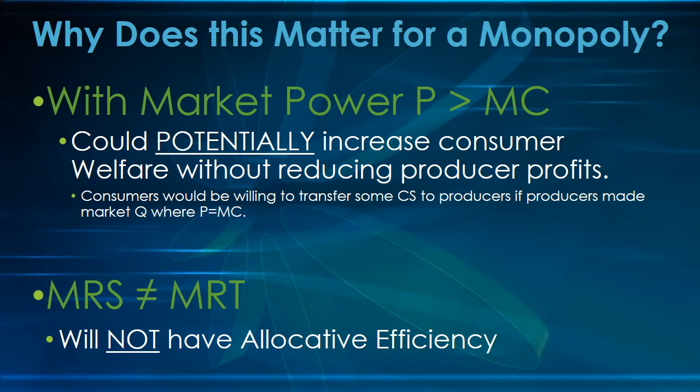But why does this matter for market power analysis? When we have market power — a monopoly — we know that price is going to be greater than marginal cost. When price is not equal to marginal cost, the marginal rate of substitution will not equal the marginal rate of transformation. Thus, when we have market power and a monopoly, we will not have allocative efficiency.